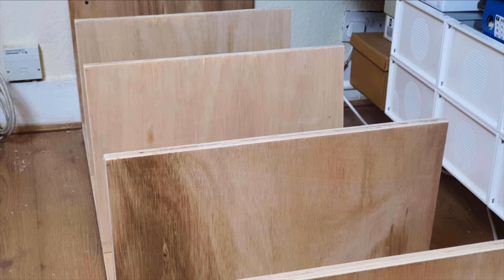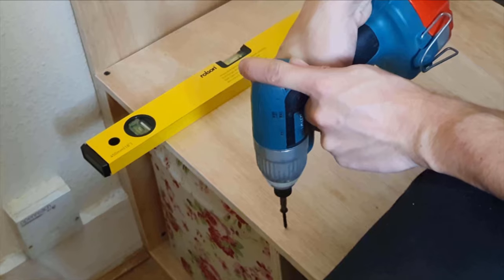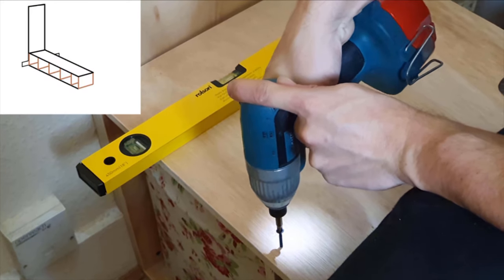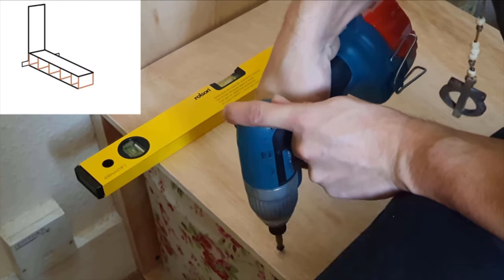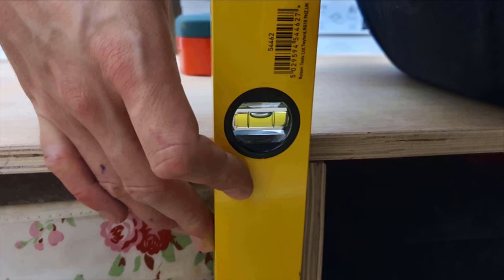This is how it looks after finishing the first row. I added a layer of plywood sheet on top of this. Before screwing this down I checked and made sure that dividers are plumb.